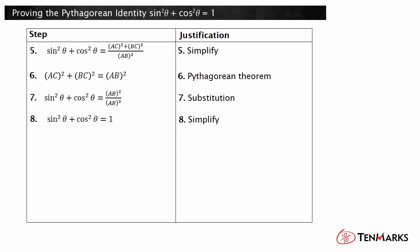And you just proved the Pythagorean identity. Now you know more about proving the Pythagorean identity, sine squared of theta plus cosine squared of theta equals 1. Thanks for watching!